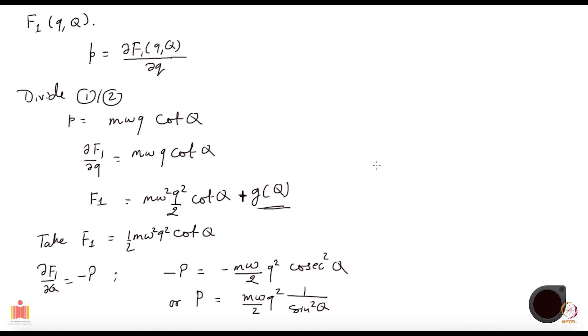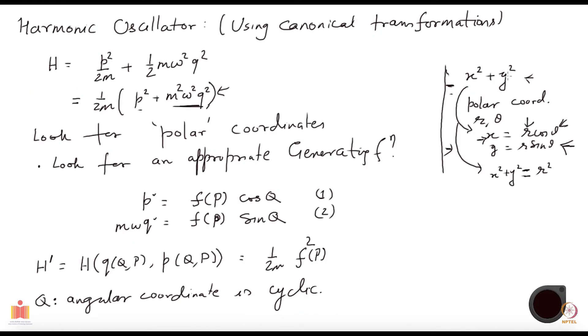I can invert it, and if I do so, I get the coordinate small q to be square root of 2 capital P over m omega sine of capital Q. So now we see immediately that our f of P is equal to square root of 2m omega capital P. So we have figured out now what this piece is.